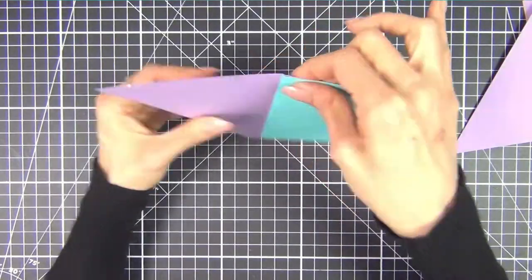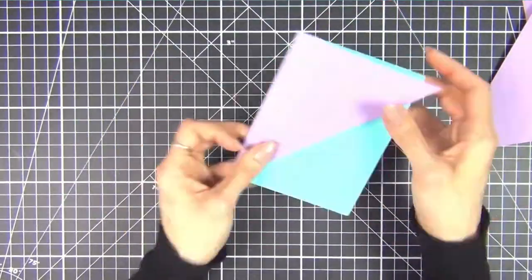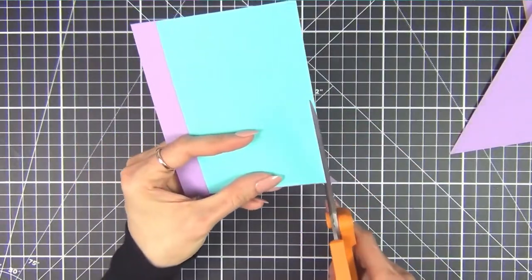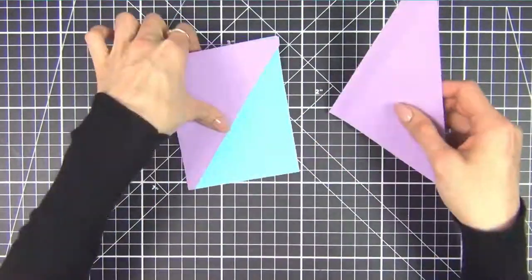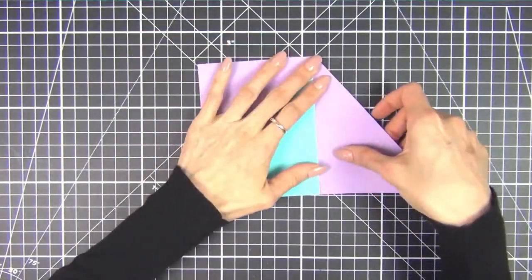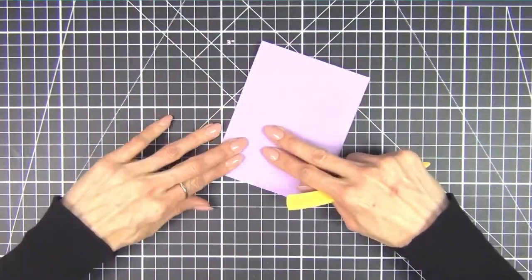To attach them, I'm just using my tape runner along the straight edge, making sure not to get any on the creases. Then I line up the panel with the crease and fold the side in, making sure to snip off that little extra piece of cardstock.